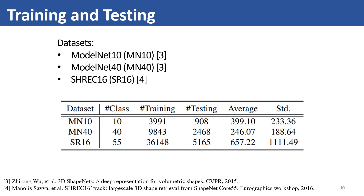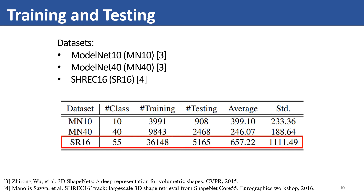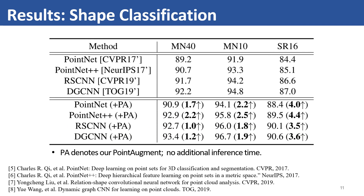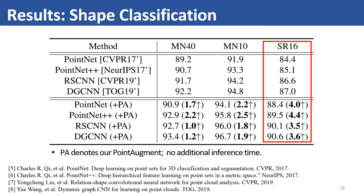We conduct extensive experiments to evaluate PointAugment on 3D datasets. The table presents detailed statistics about each dataset. SRN16 is more challenging due to the biased distribution of training samples. We report the classification accuracy of existing classification networks trained with conventional data augmentation compared with our PointAugment on different datasets. The results show clear improvements across these networks, and PointAugment is especially effective on the imbalanced SRN16 dataset, demonstrating that it can alleviate the class imbalance problem through our sample-aware data augmentation strategy.